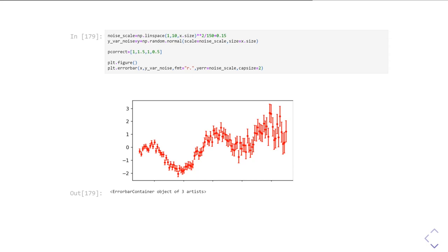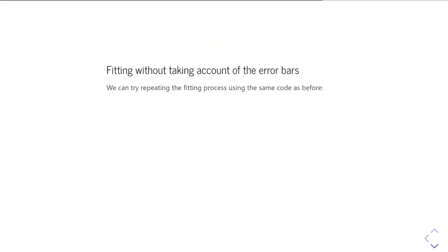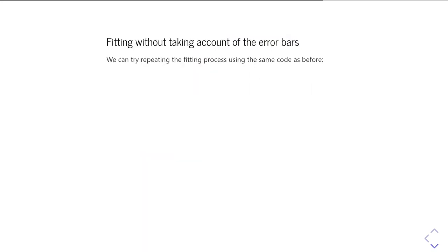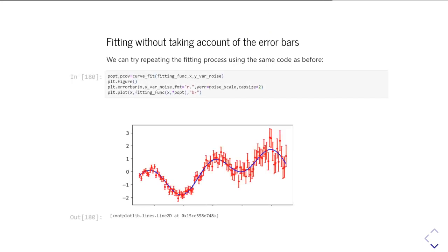So now, having plotted all of that, we can have a go at trying to actually fit the data. Let's start off fitting without making allowance for those error bars. Because my fitting parameters are all back close to one, I don't need to supply a p0 in this particular case. For our curve_fit, I'm just putting in the fitting function, then the x and the y with the noise that's varying as we go from left to right. We plot it, fit it, and look at what the results look like.